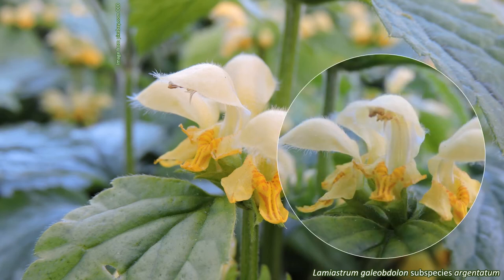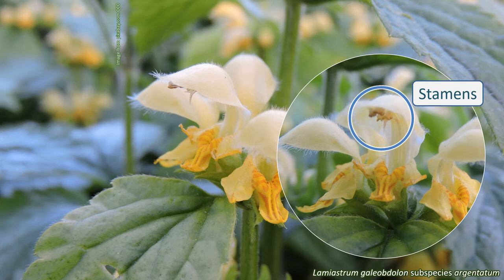There are normally four stamens, and two are often longer than the others — or two are often shorter than the others, depending on your point of view. The sepals are also fused to form a tube, the calyx tube, around the tube made by the fused petals, which is the corolla tube.